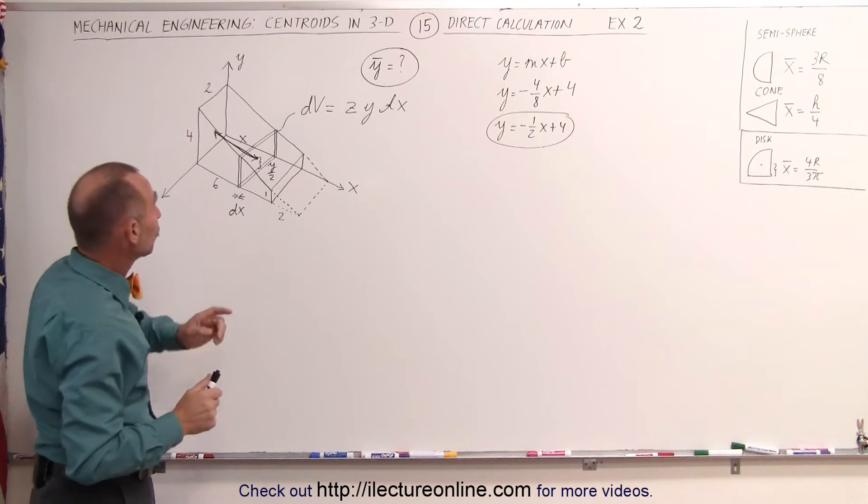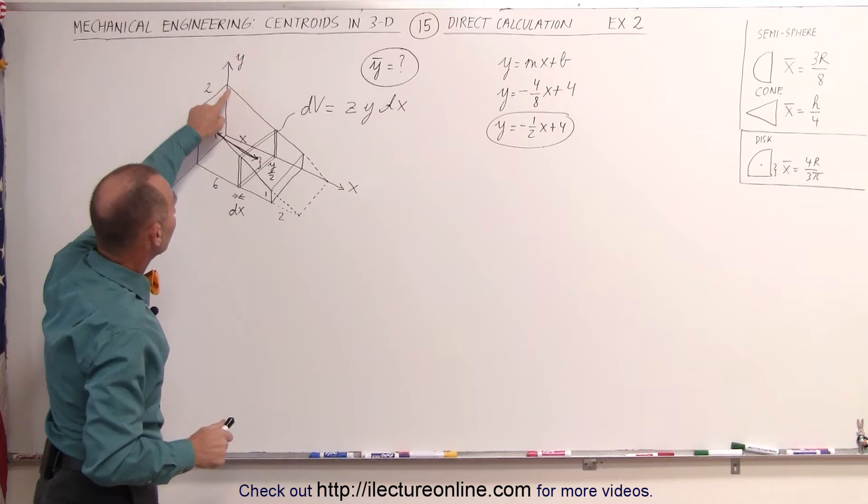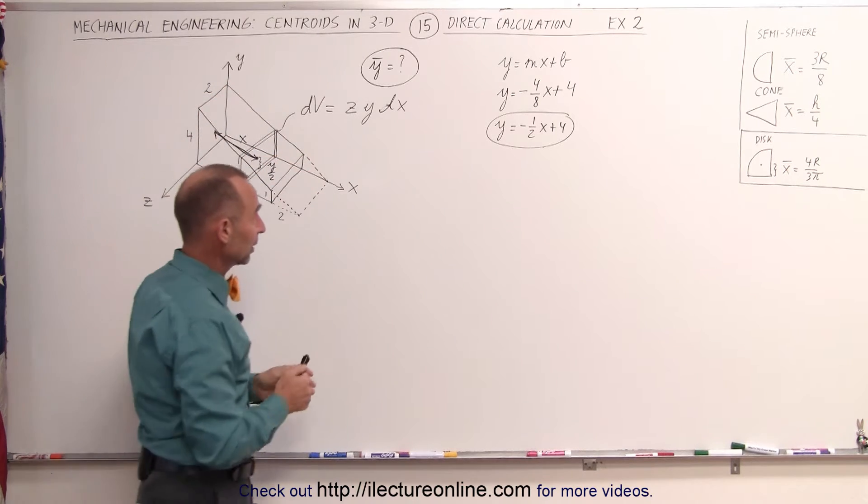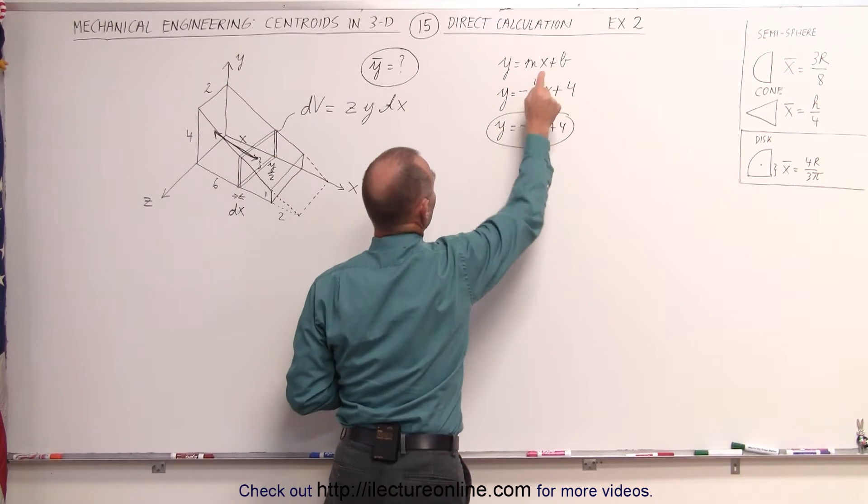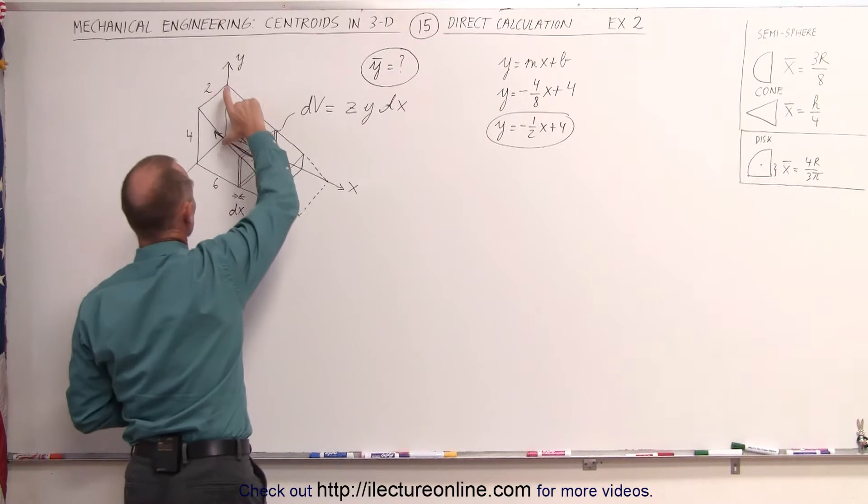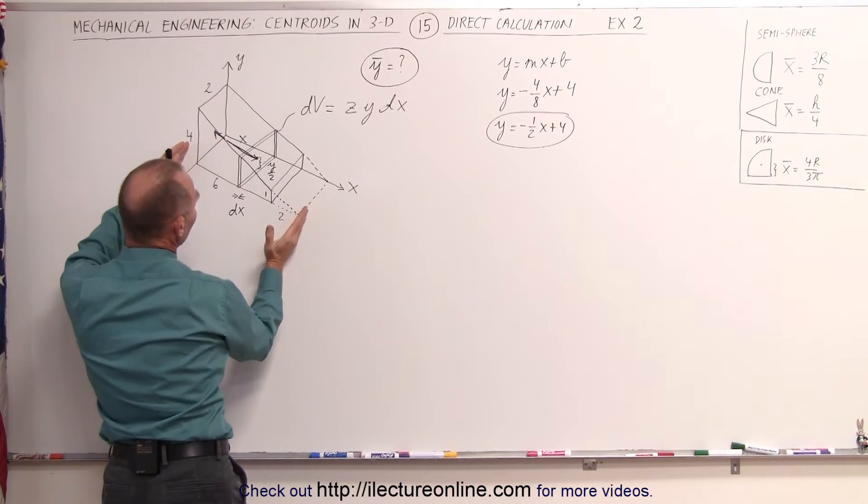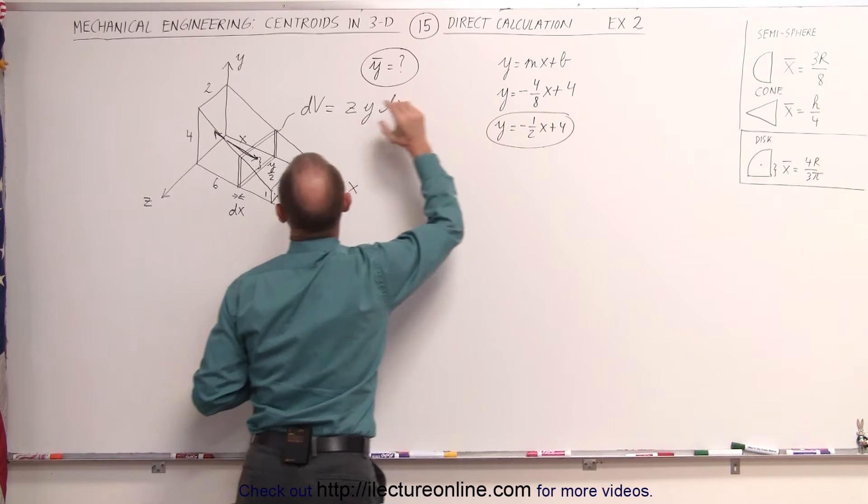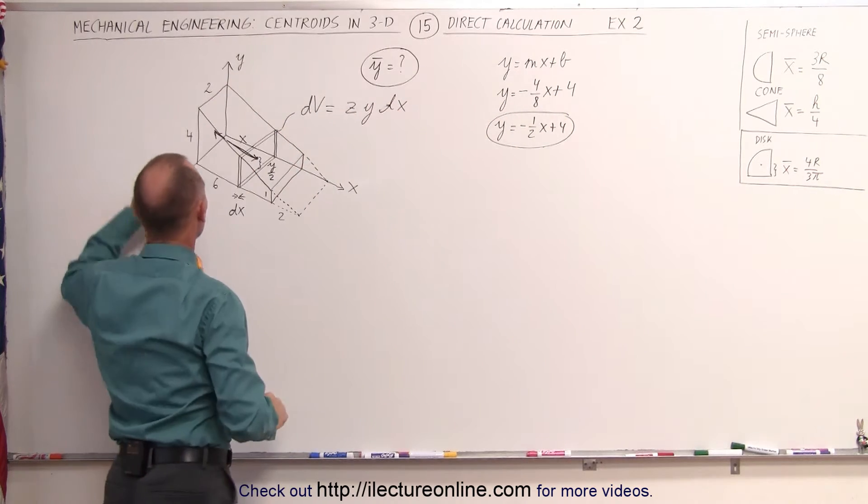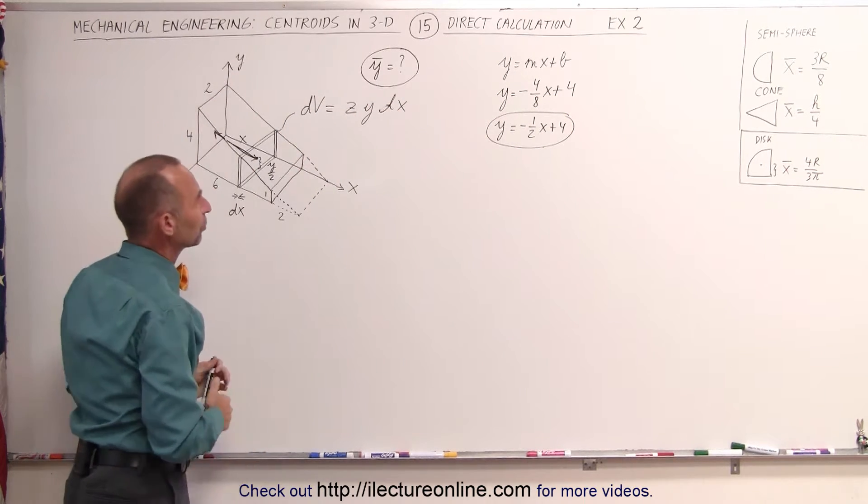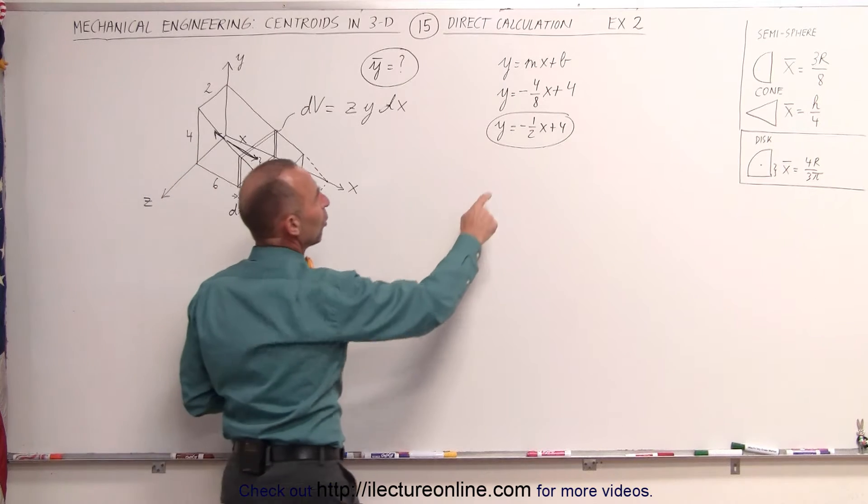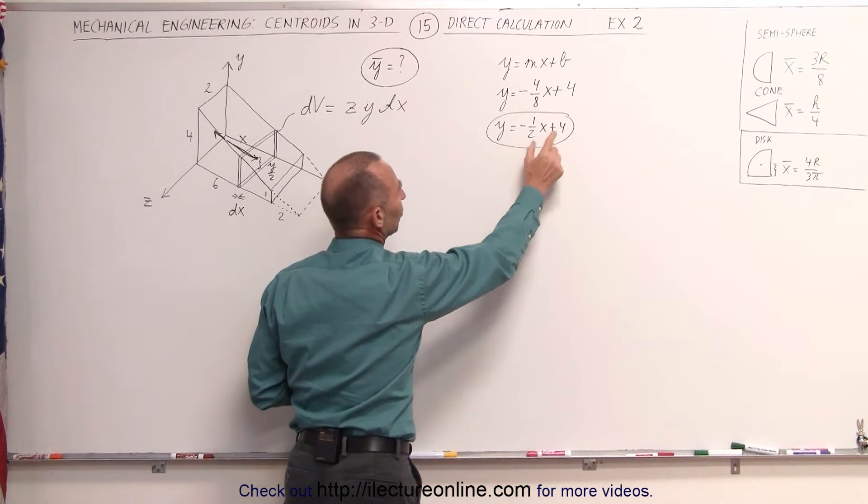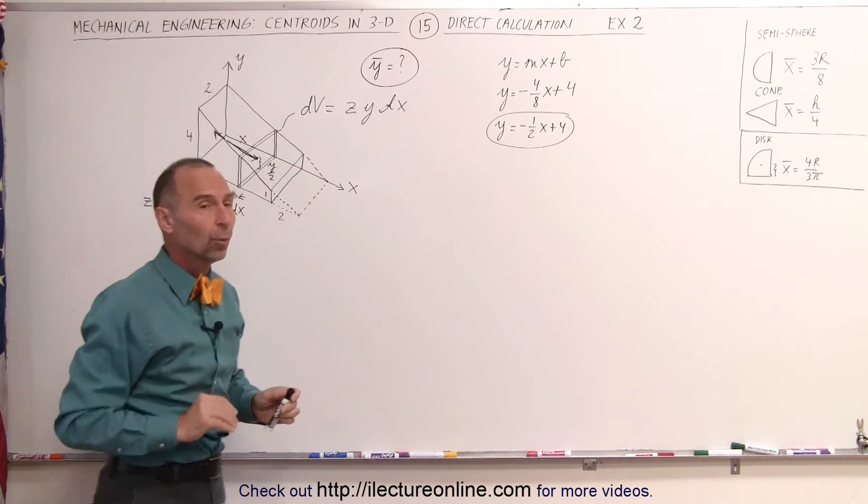We still have the same relationship between the x and the y variable, it's this line right here, which can be written in the terms of y equals mx plus b. The slope in this case is a drop of 4 over run of 8, so minus 4 over 8, that's the slope times x, plus the y-intercept would be equal to 4, the height of this wedge at the end here is equal to 4, so the equation y equals minus one-half x plus 4 is the relationship between x and y.